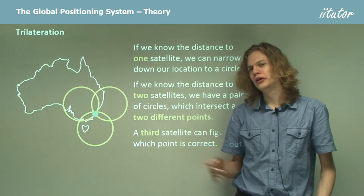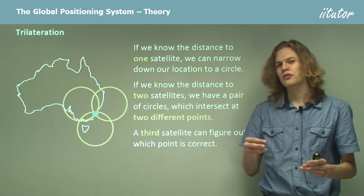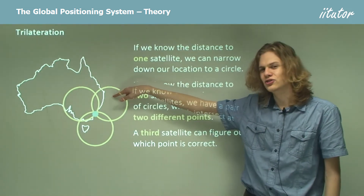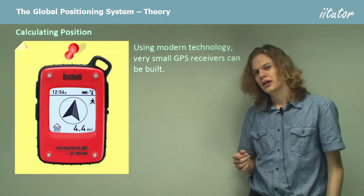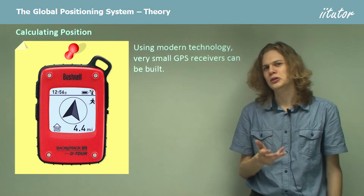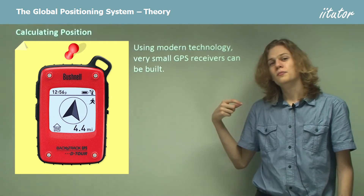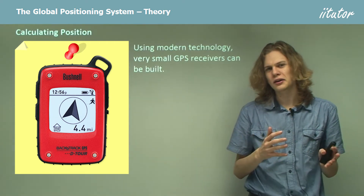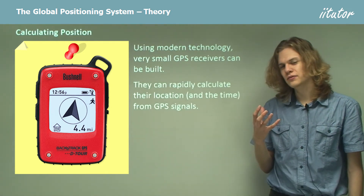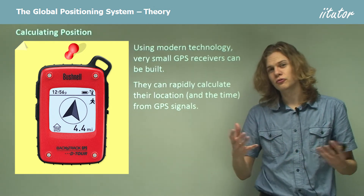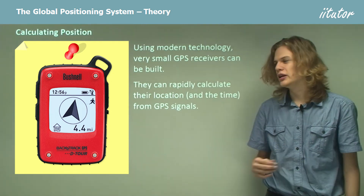These circles will often be very different sizes depending on whether the satellite is directly overhead or quite a distance off from where you currently are. Using modern technology — transistors, microchips, and the like — we can build very small GPS receivers. The mathematics for trilateration aren't all that complicated; we don't need a supercomputer to do them. So these tiny GPS receivers, once they receive signals from three different satellites, can very rapidly calculate exactly where they are.